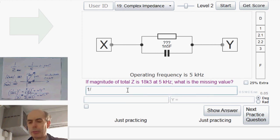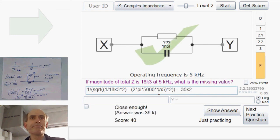Right. 1 divided by, in these brackets, is the square root of... Well, first, 1 over 18k3 squared. And then subtract omega, which is 2 times pi times 5,000 times C, which is 1 nanofarad, 0.5, and all that squared. And then just close that square root, close that bracket, and we should be there. Excellent.